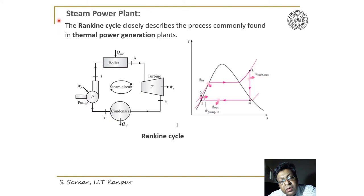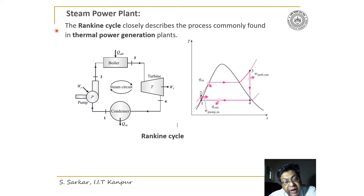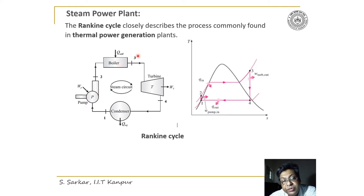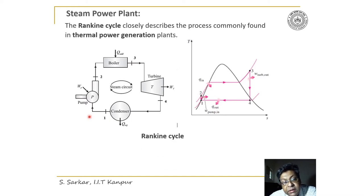For a steam power plant, the Rankine cycle closely describes the process found in a thermal power plant. In a thermal power plant, a pump is used to compress water, and the high-pressure water is fed to the boiler where it is heated and steam is produced. That superheated steam is expanded by the turbine to produce work output to run the generator. It is again condensed, and the condensed water is pumped back to the boiler to complete the cycle.